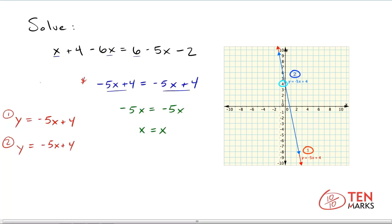So if it's y equals negative 5x plus 4, it has a y-intercept of 4 and a slope of negative 5. Both of these lines are the same, which means for the solution, there are infinitely many solutions or all solutions.